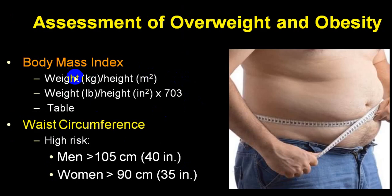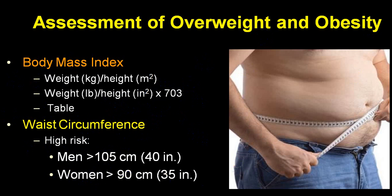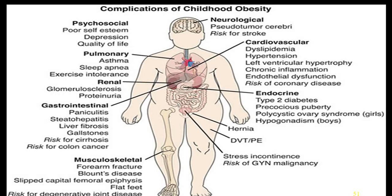BMI is weight in kilograms divided by height in square meters, or weight in pounds multiplied by 703 divided by height in square inches. Ready-made tables are available. Waist circumference: more than 105 cm in males and more than 90 cm in females is obese. In children, complications of obesity include psychosocial, pulmonary, renal, gastrointestinal, musculoskeletal, neurological, cardiovascular, endocrine disorders, and miscellaneous issues.